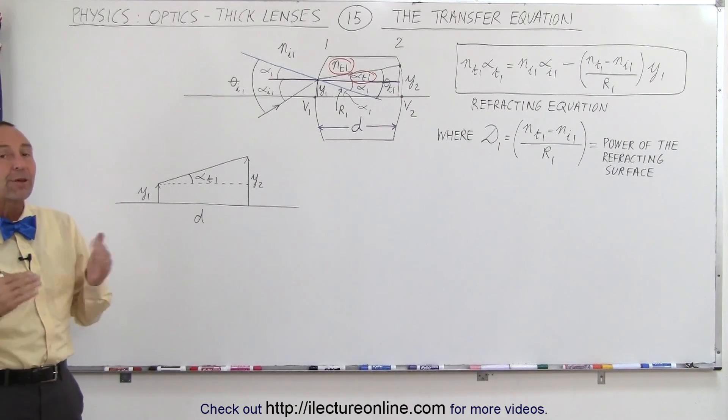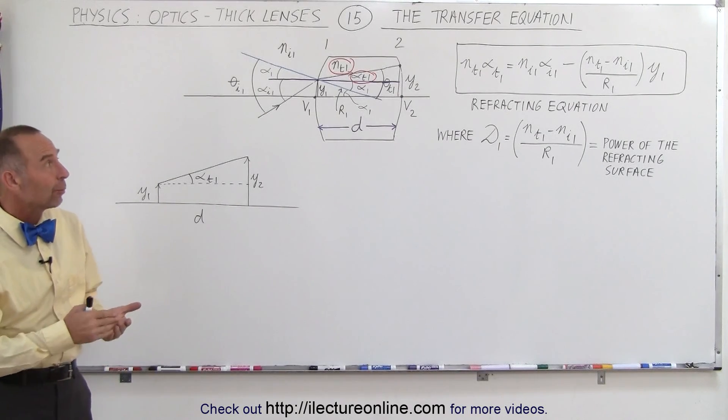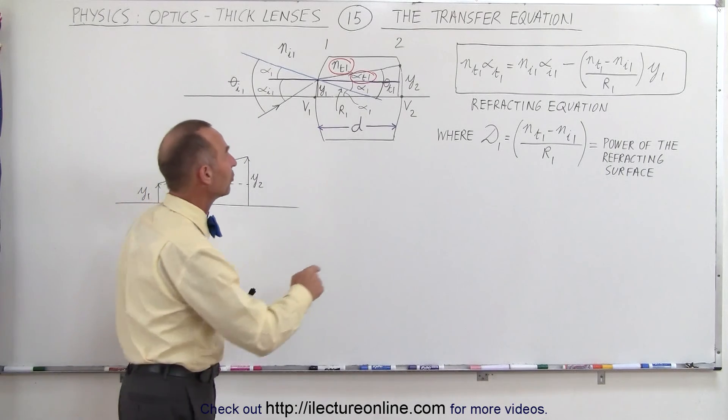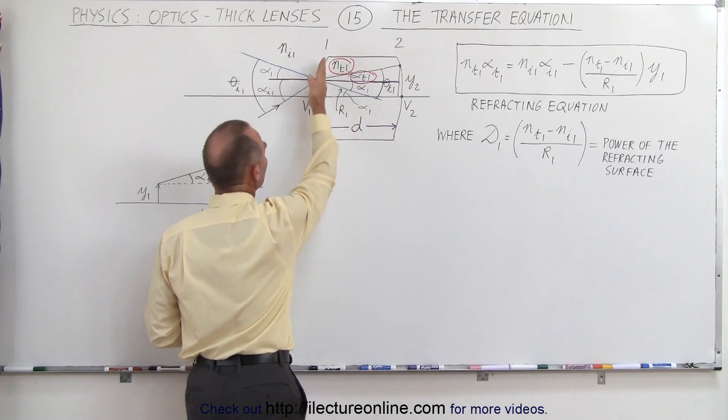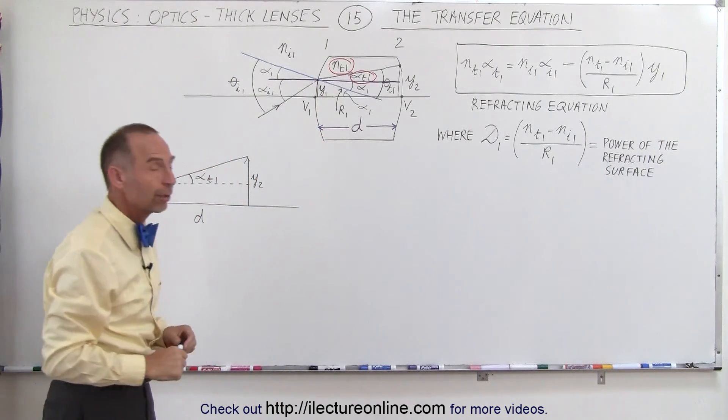Welcome to ElectronLine. On the previous video we derived what we call the refracting equation, the equation that describes what happens to the ray when it crosses the first boundary, the front boundary.